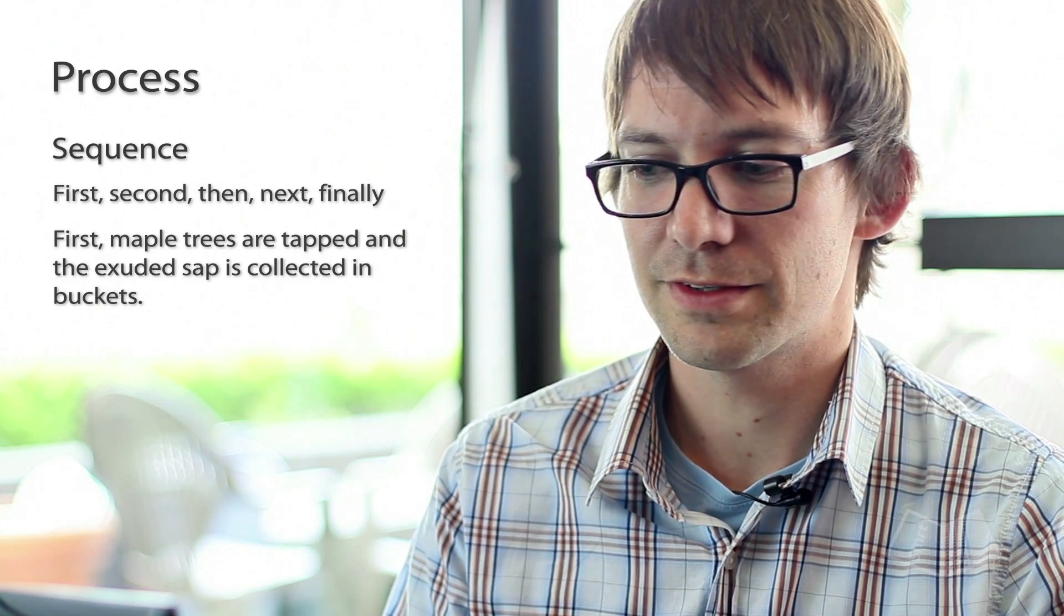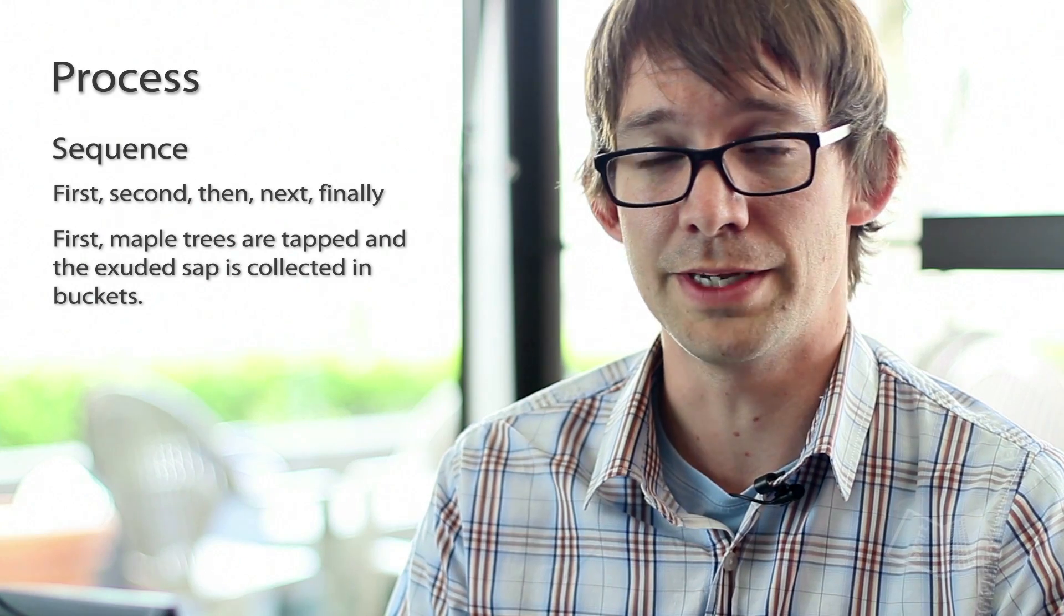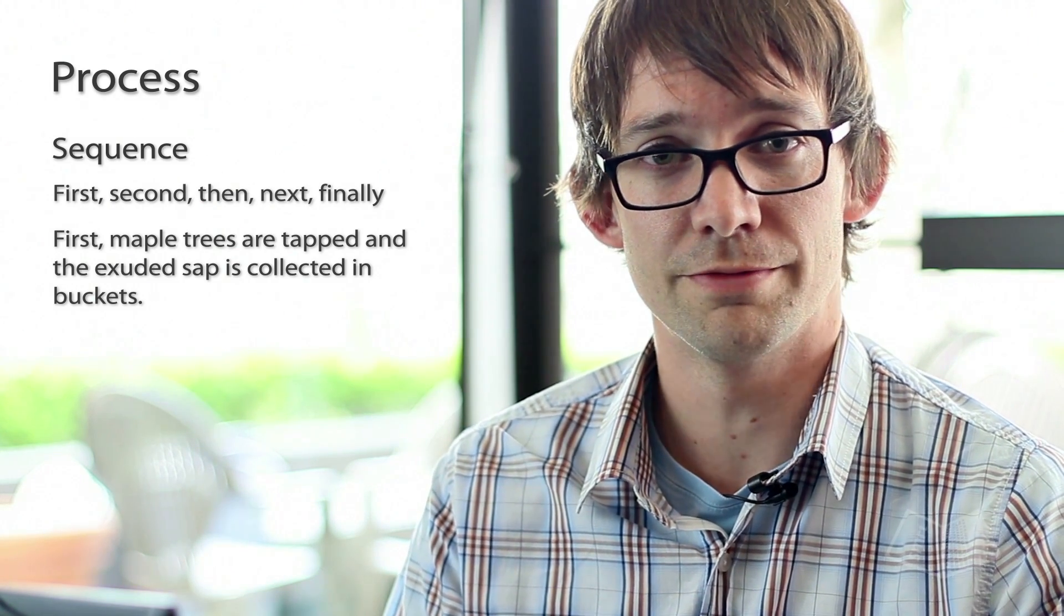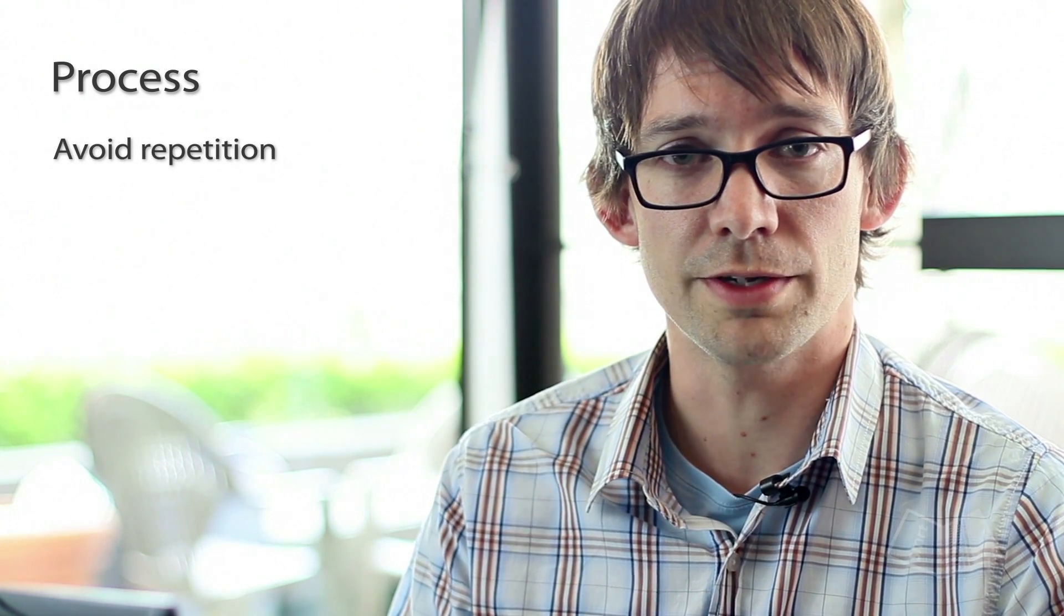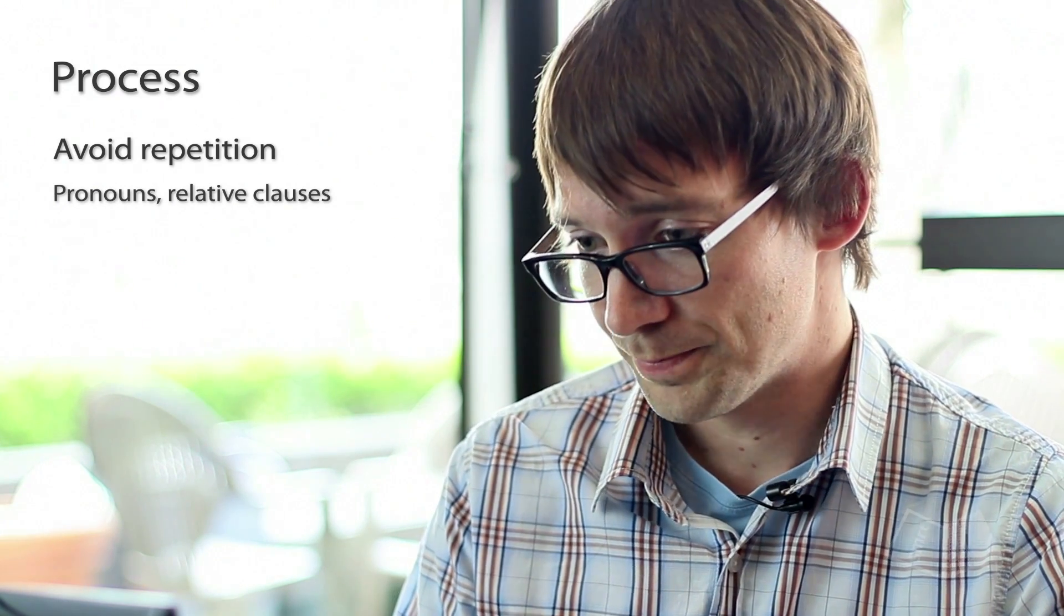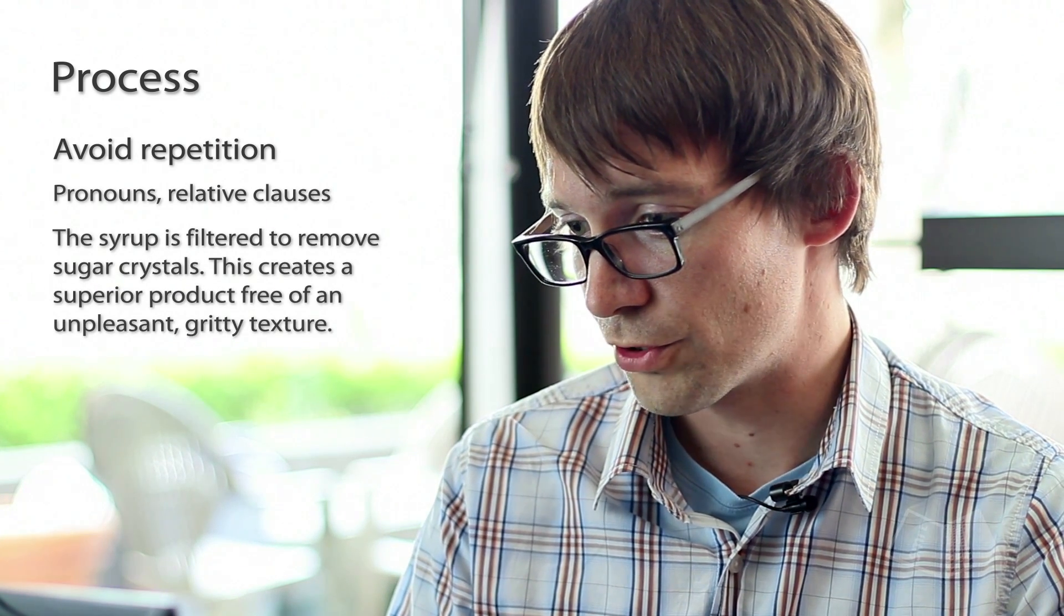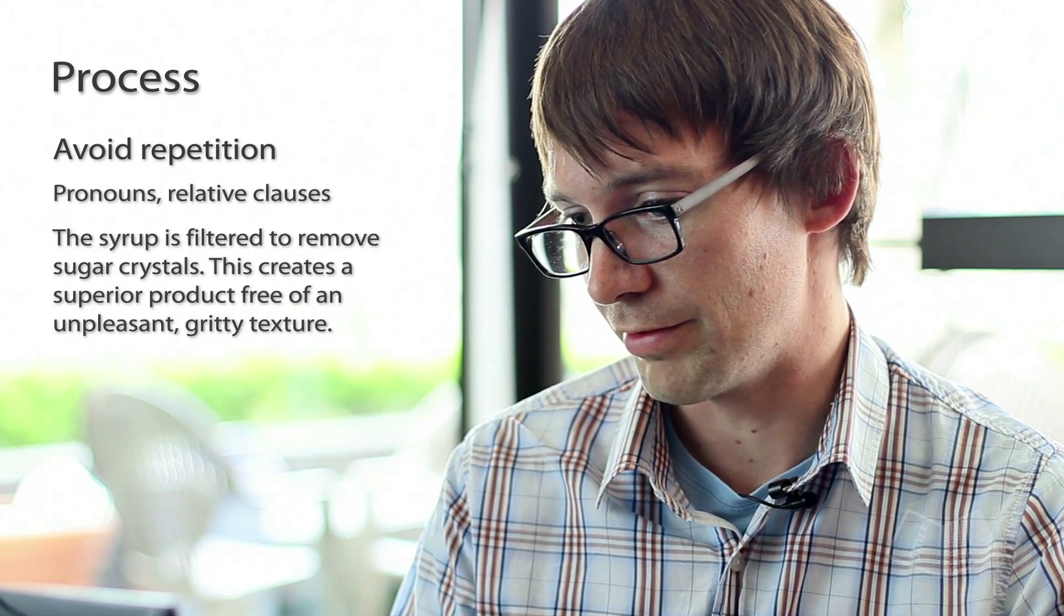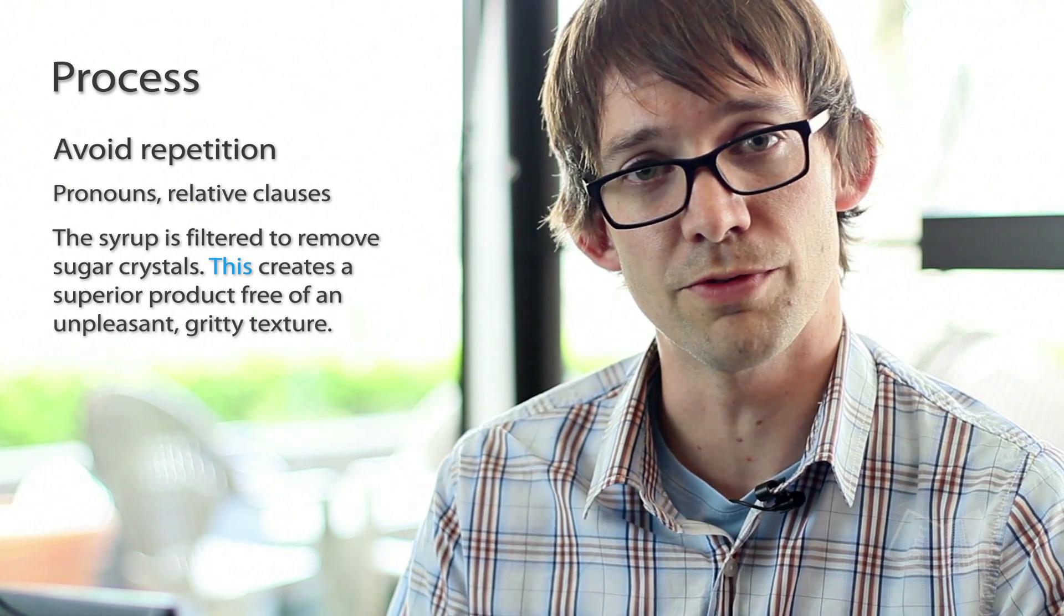Now while it's important to use words that show sequence, you don't want to use a sequence word at the beginning of every sentence. You don't want to be saying first, second, third, fourth, fifth, and so on. You want to avoid repetition. So an easy way to do that is to use pronouns and relative clauses. For example, the syrup is filtered to remove sugar crystals. This creates a superior product free of an unpleasant gritty texture. So the word 'this' is referring to the entire sentence beforehand.